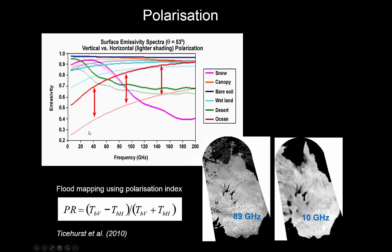For example, we can use it to map out where water is on the surface using the polarization ratio (PR), which looks at the brightness temperature in vertical polarization. Remember that brightness temperature is the temperature the observed object appears to have if you assume it is a blackbody — in other words has an emissivity of 1. We measure the irradiance from the object, assume emissivity of 1, and work out the temperature using Planck's law. To calculate the polarization ratio we subtract the vertical brightness temperature minus the horizontal polarization brightness temperature and divide that by the sum of those two. It's a normalization, as you often see in remote sensing indices, and different frequencies give different results.